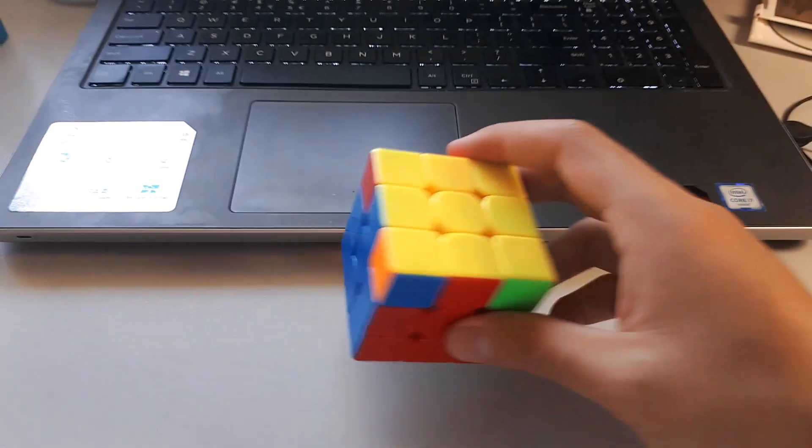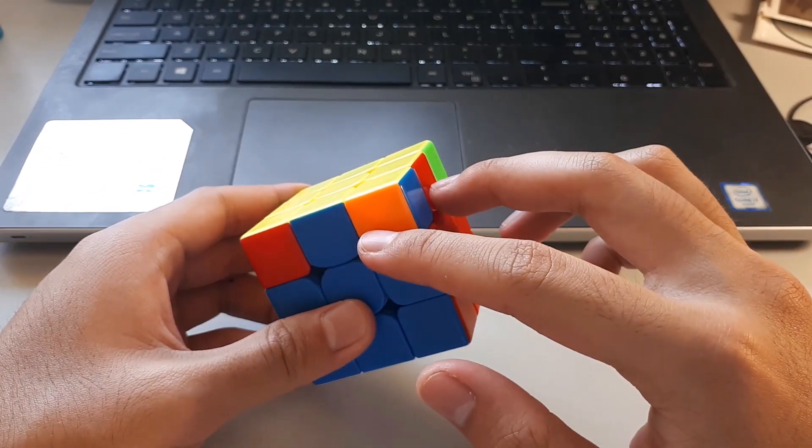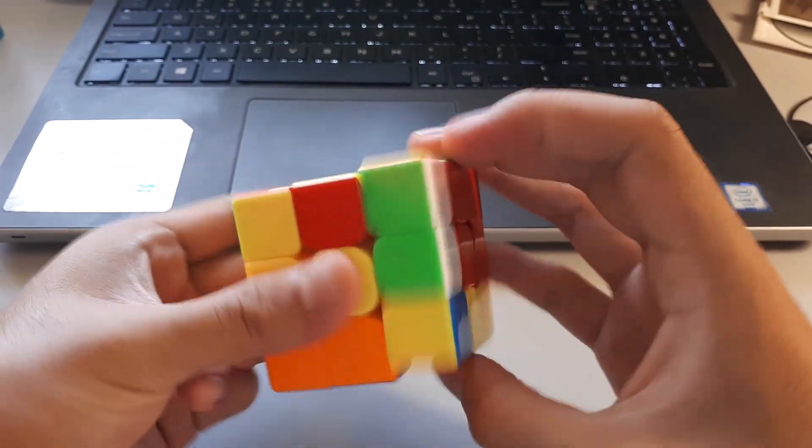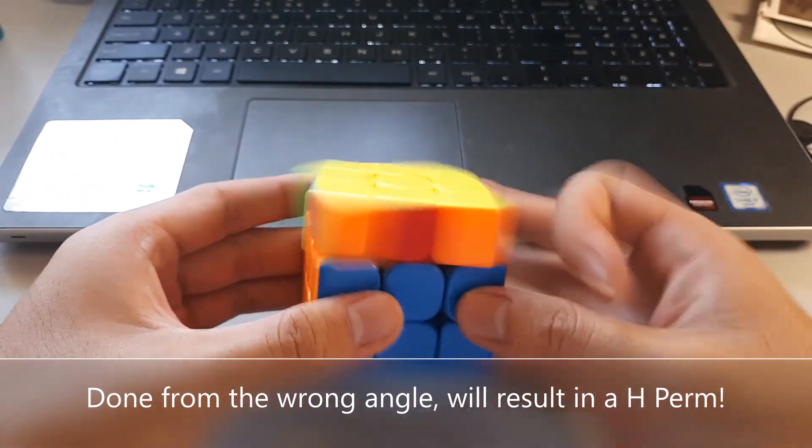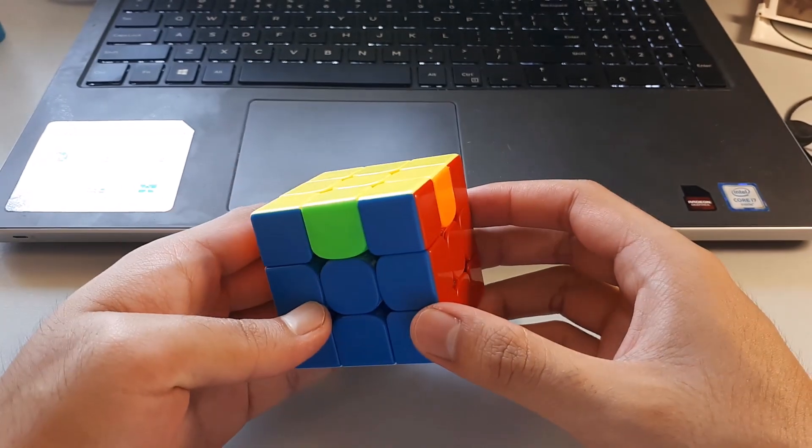So just if you're wondering, when I do the E-perm from this angle, the incorrect angle when these two aren't matching, if I do the E-perm algorithm, I end up getting an H-perm, which is not good because nobody has time to do PLL twice.